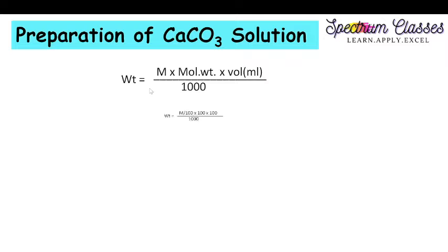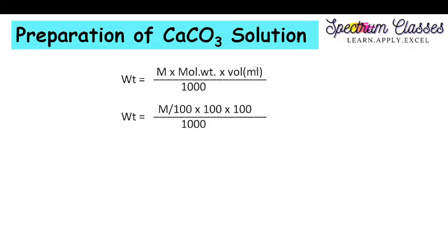Putting all the values in: the molarity I want to prepare is M/100, the molecular weight of calcium carbonate is 100, and I wish to prepare this solution in 100 mL. Since I am preparing this solution in mL I need to convert it into liters by dividing by 1000, which gives 0.1 grams of calcium carbonate to dissolve in 100 mL.